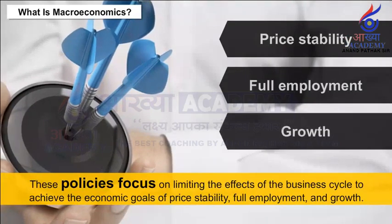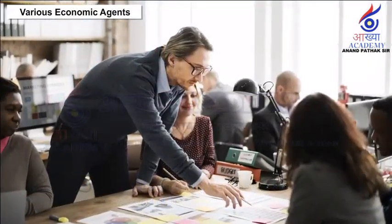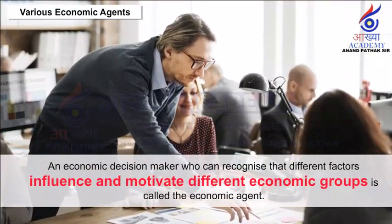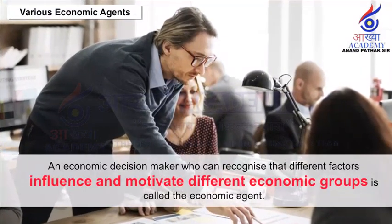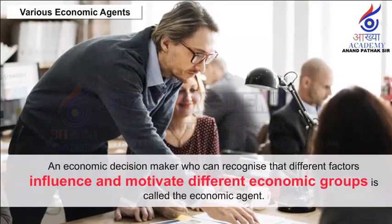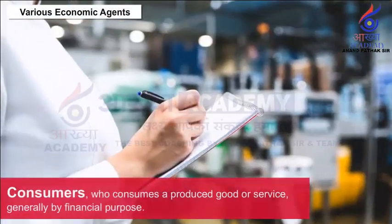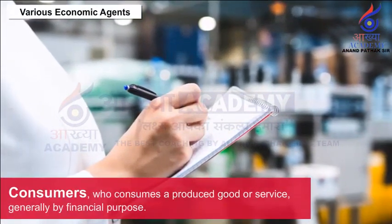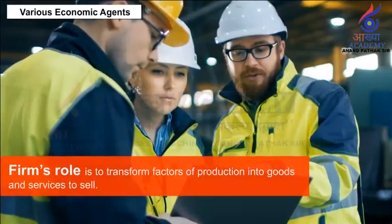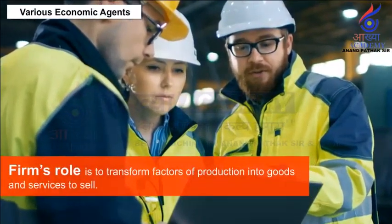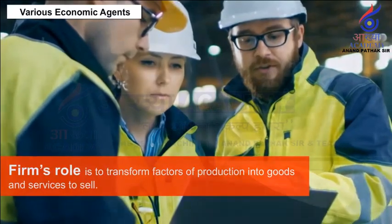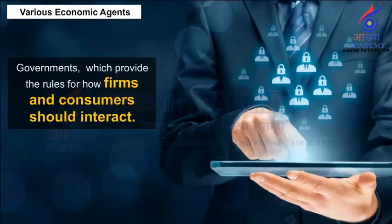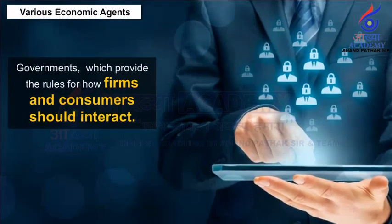Various Economic Agents. An economic decision maker who can recognise that different factors influence and motivate different economic groups is called the economic agent. There are three types of economic agents: (1) Consumers, who consume a produced good or service, generally by financial purpose; (2) Firms, whose role is to transfer factors of production into goods and services to sell; (3) Governments, which provide the rules for how firms and consumers should interact. This is evident in developed economies.